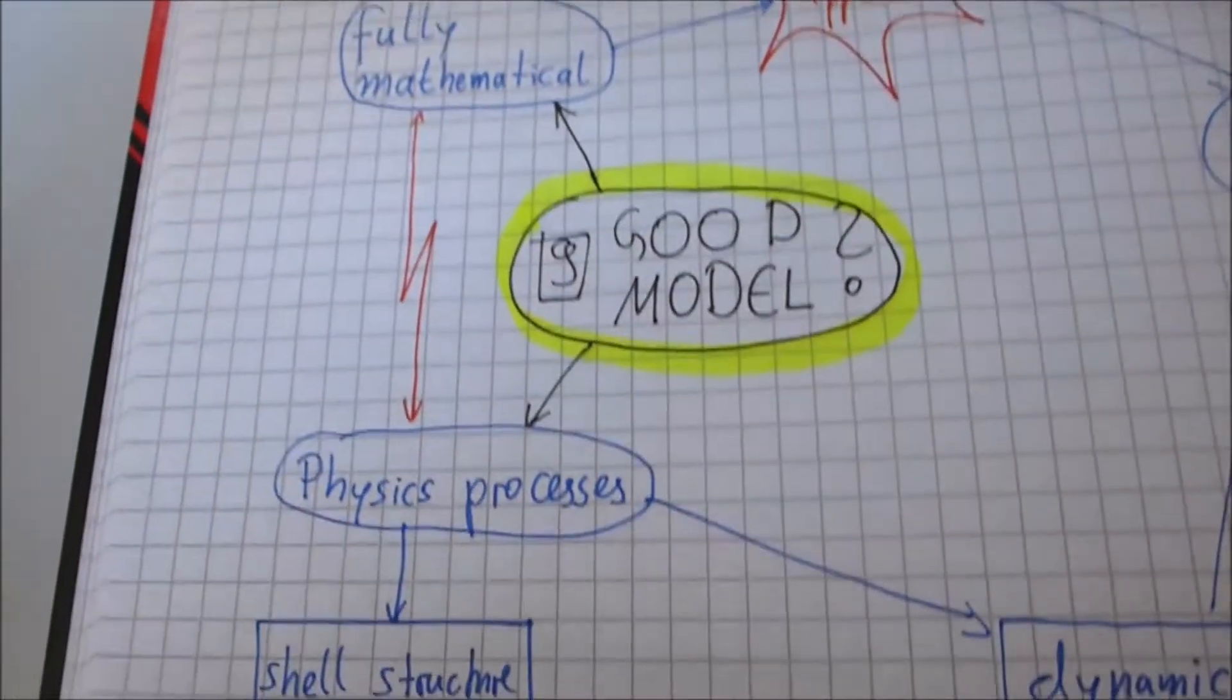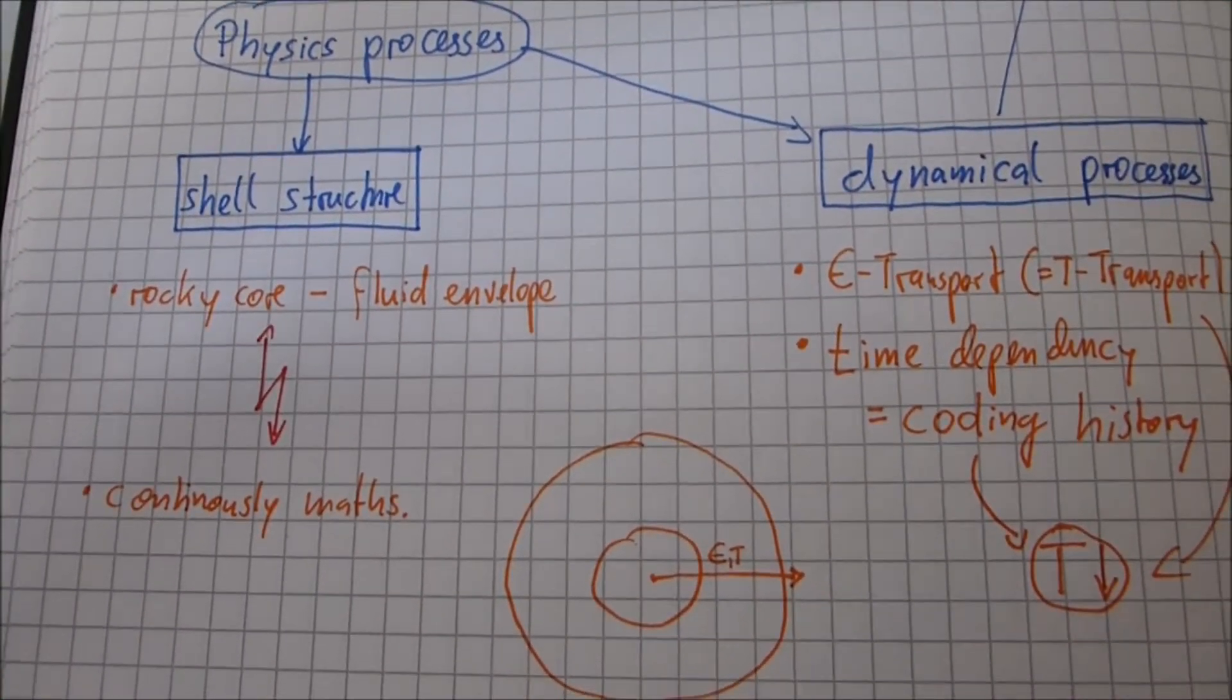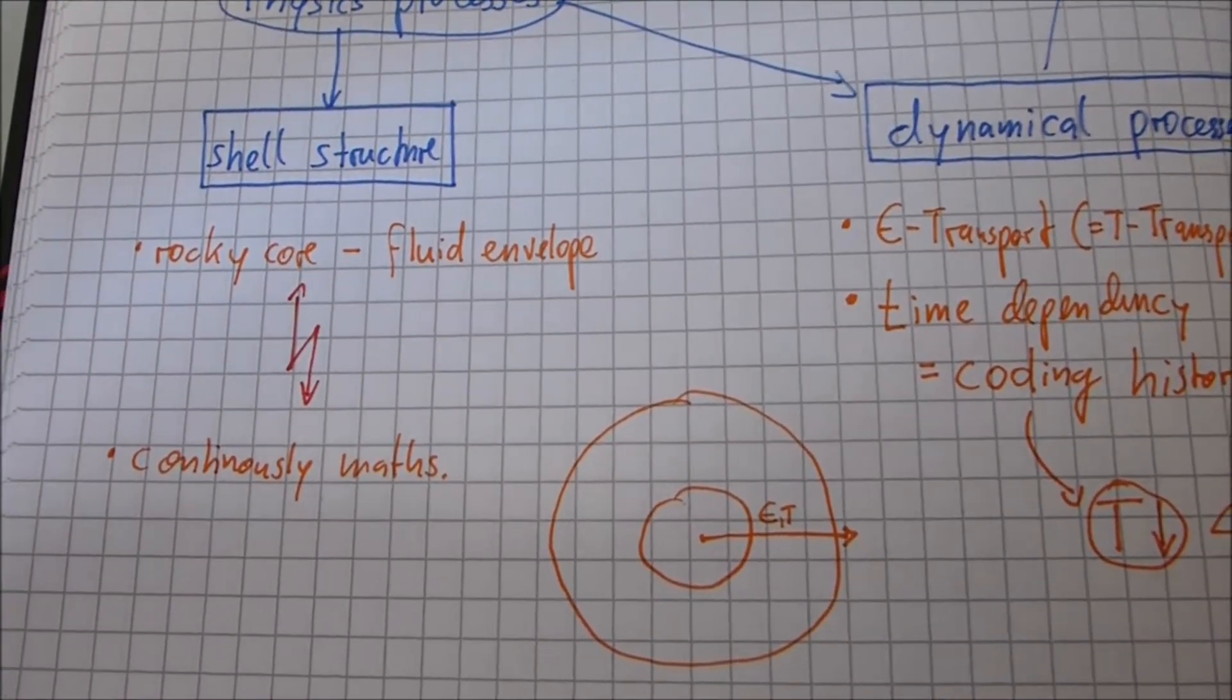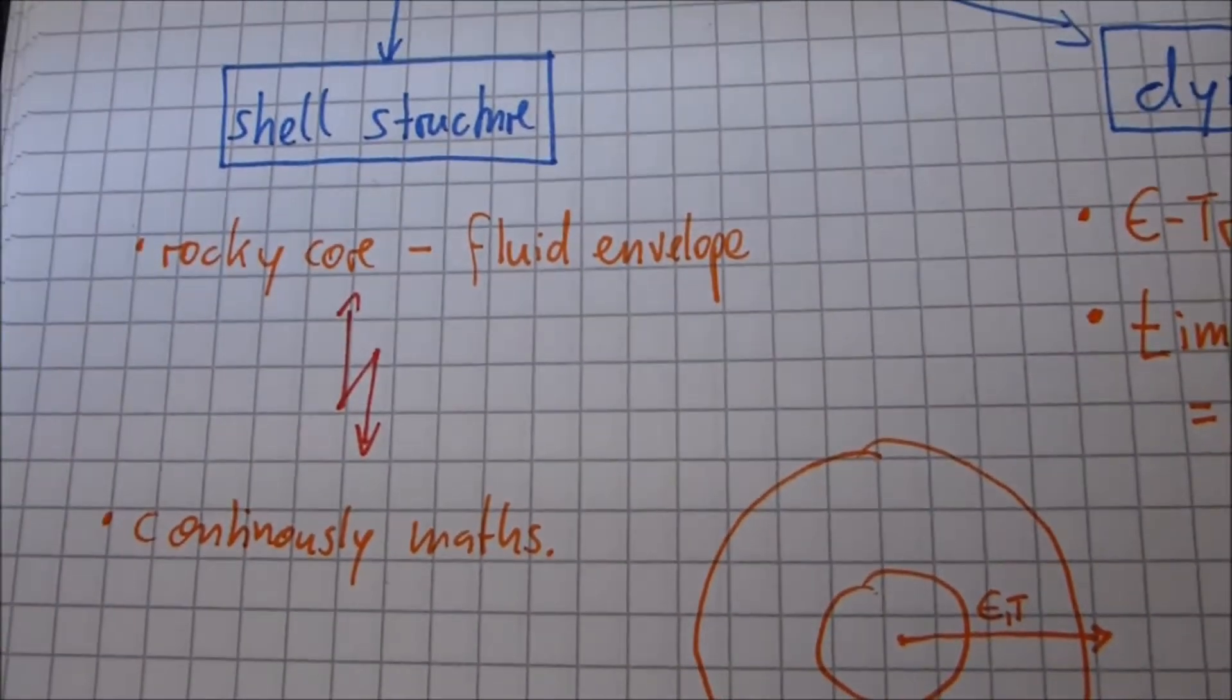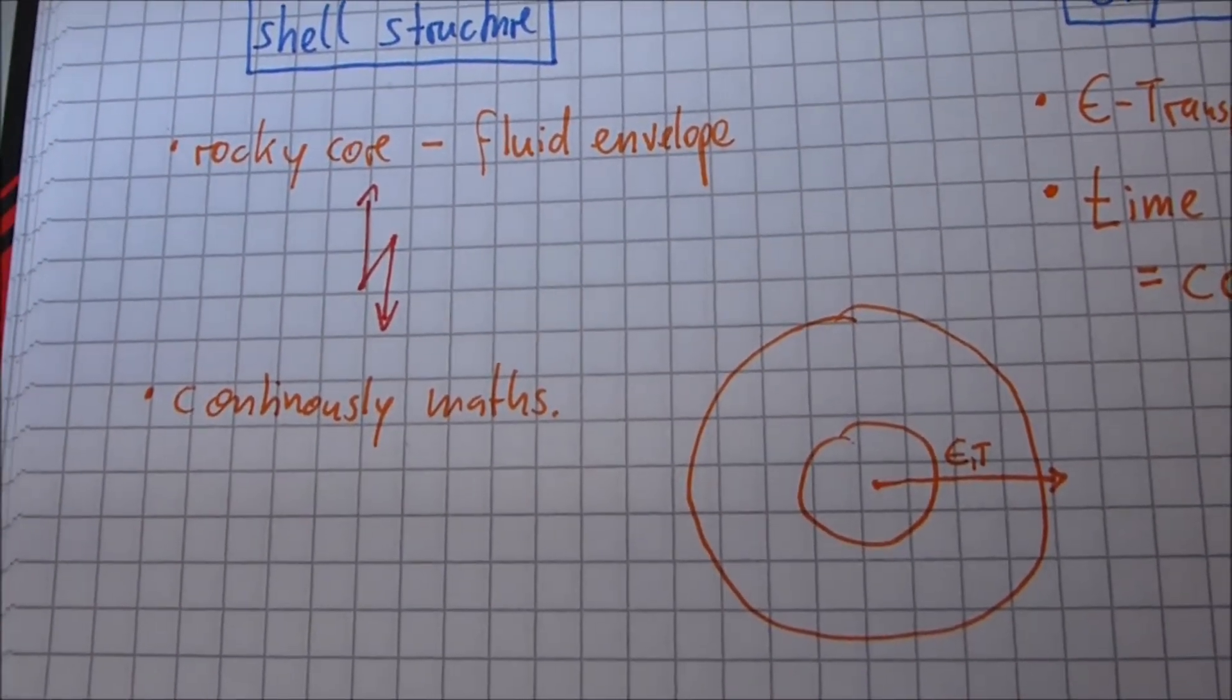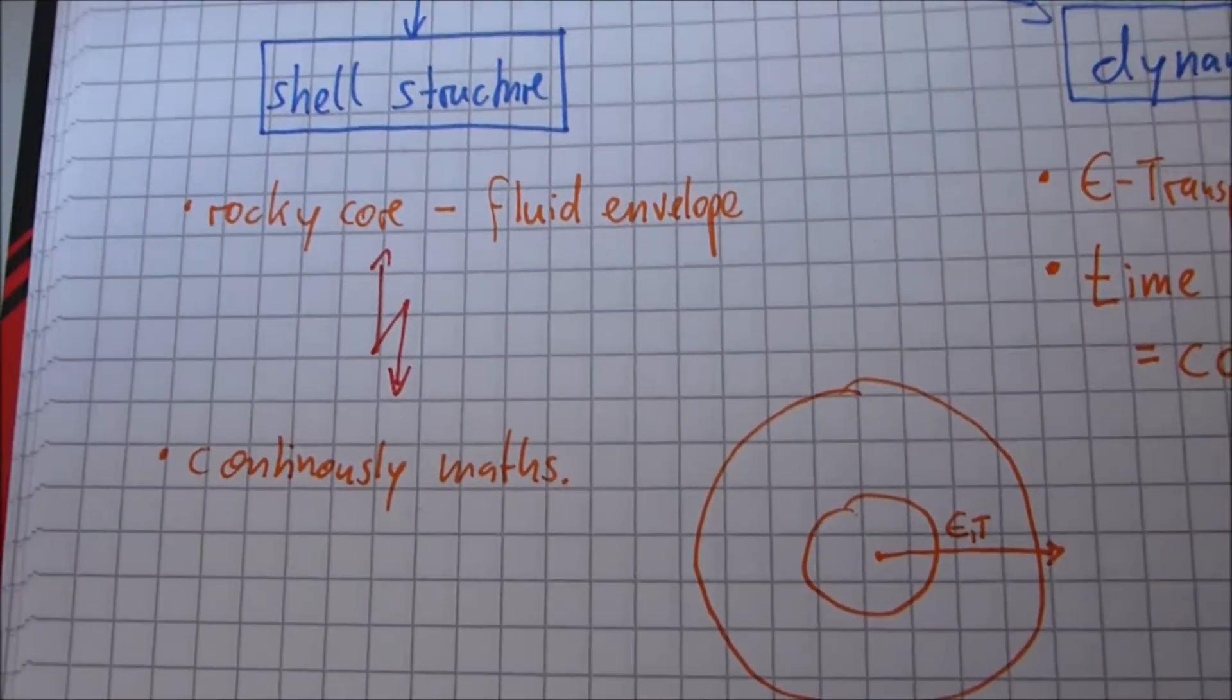So first physics process we didn't consider was a shell structure. Because in Jupiter, for example, we have a rocky core and a fluid envelope. And our mathematics, our differential equations and stuff are continuously. That isn't the same, obviously.